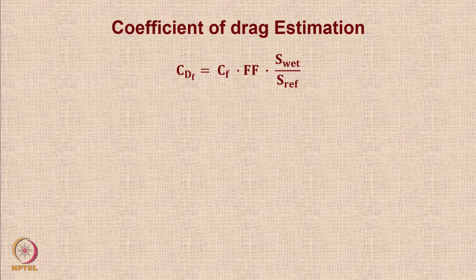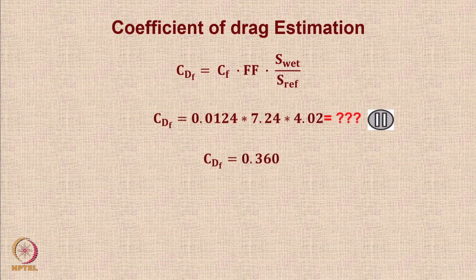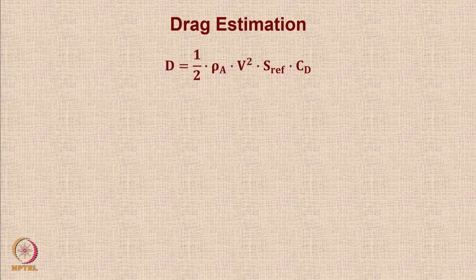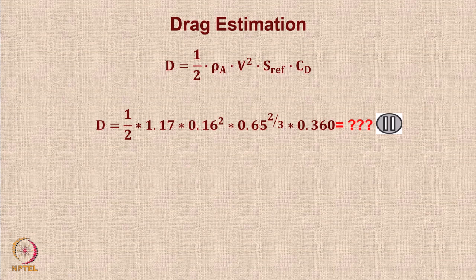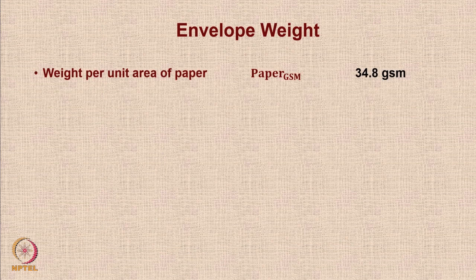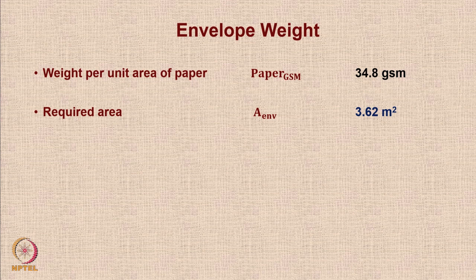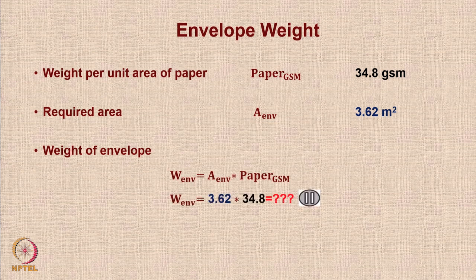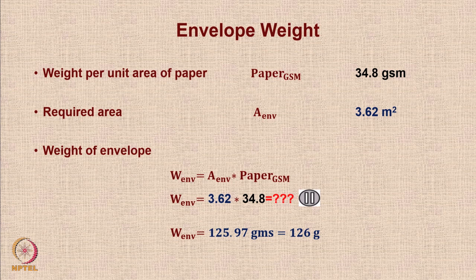For weight estimation, first is the envelope weight. We measured the GSM (grams per square meter) of the envelope and found it to be around 34.8 to 35 grams per square meter. The required area of the envelope was 3.62 square meters. So the weight of the envelope is simply the multiplication of these two quantities: approximately 125.9 or 130 grams. Note that the weight of glue has not been included here, but it should be.